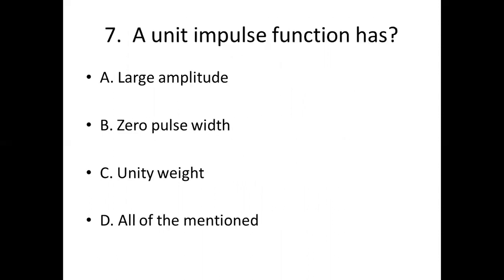Question 7 options: Option A: large amplitude. Option B: zero pulse width. Option C: unity weight. Option D: all of the mentioned. Answer: Option D — all of the mentioned.